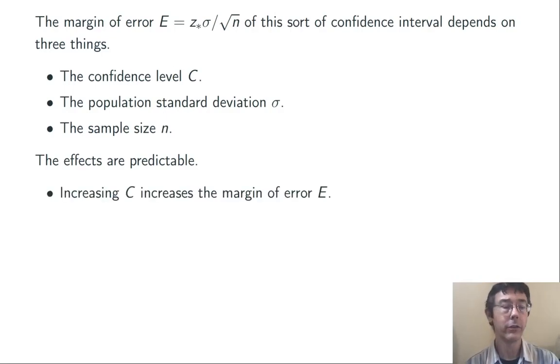If we increase the confidence level C, that's going to increase the margin of error. It's going to increase the z*, and therefore E as well. This makes sense. All of the things being equal, if we want to get the right answer more often, we have to allow ourselves a greater margin of error.